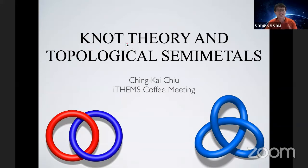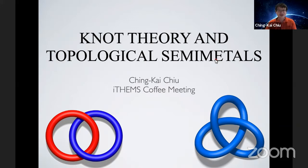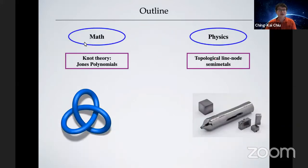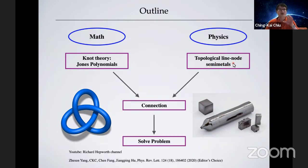Today I'm going to talk about knot theory and its relation to topological semimetals in condensed matter. The outline: we'll talk about mathematics and introduce the Jones polynomial in knot theory, then discuss what topological nodal line metals are, and later combine these two ideas and explore their connection.